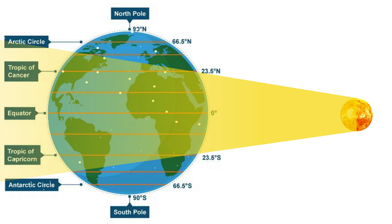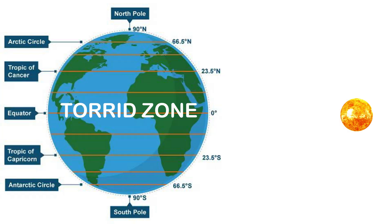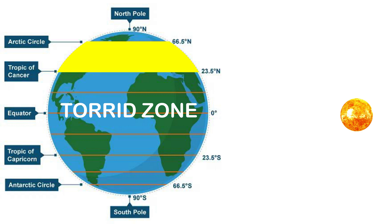The midday sun is exactly overhead at least once a year on all latitudes in between the Tropic of Cancer and the Tropic of Capricorn. This area therefore receives the maximum heat and is called the Torrid Zone. The midday sun never shines overhead on any latitude beyond the Tropic of Cancer and the Tropic of Capricorn — the angle of the sun's rays goes on decreasing towards the poles. The areas bounded by the Tropic of Cancer and the Arctic Circle in the Northern Hemisphere, and the Tropic of Capricorn and the Antarctic Circle in the Southern Hemisphere, have moderate temperatures and are called the Temperate Zones.